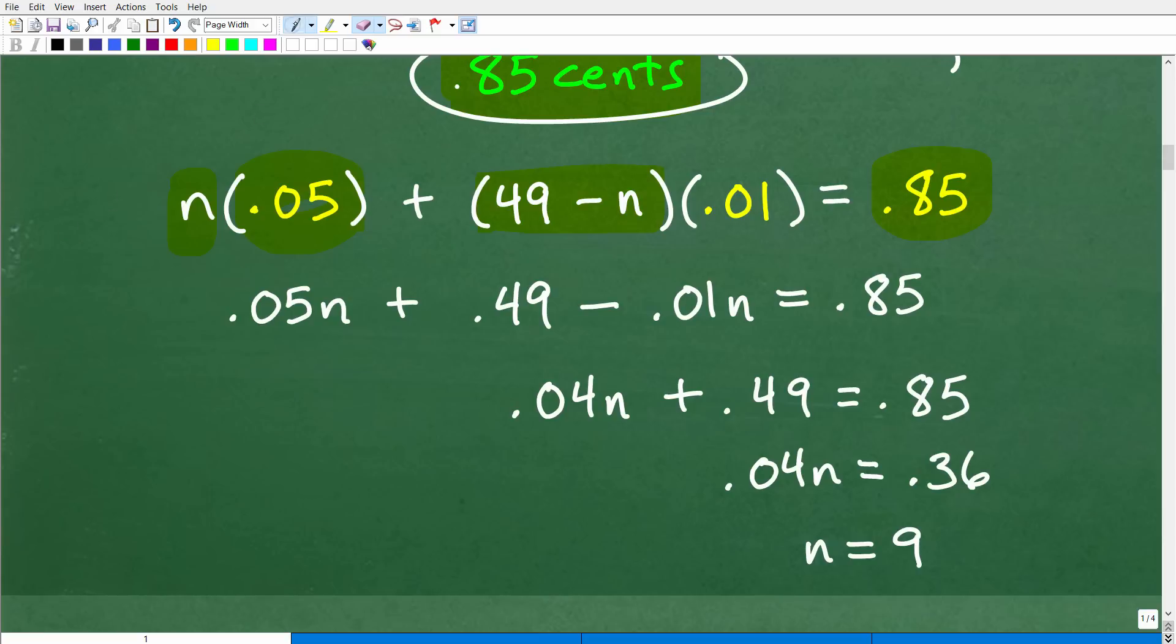Okay, so what do we have here? N times 0.05. So you don't want to write the N in front of this. This is the coefficient. So we're going to write this as 0.05N plus this 0.01 I have to distribute here and here. Okay, so this is a case for the distributive property. 0.01 times 49 is 0.49. 0.01 times this N right here is 0.01N. Okay, of course, we have that minus sign right there. And it's equal to 0.85.